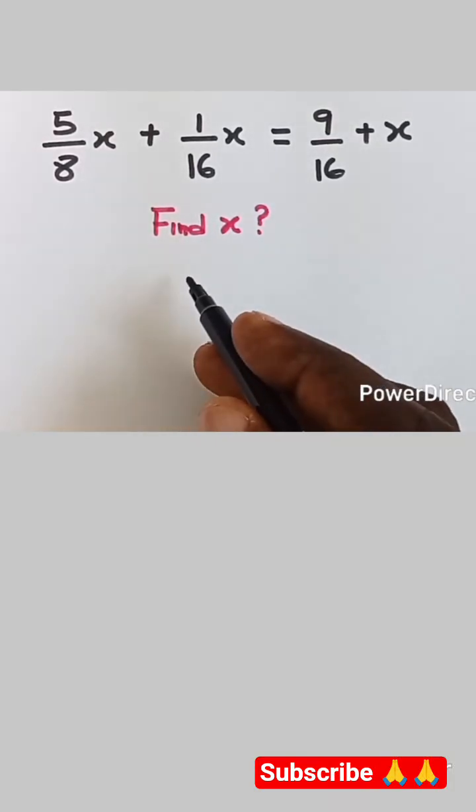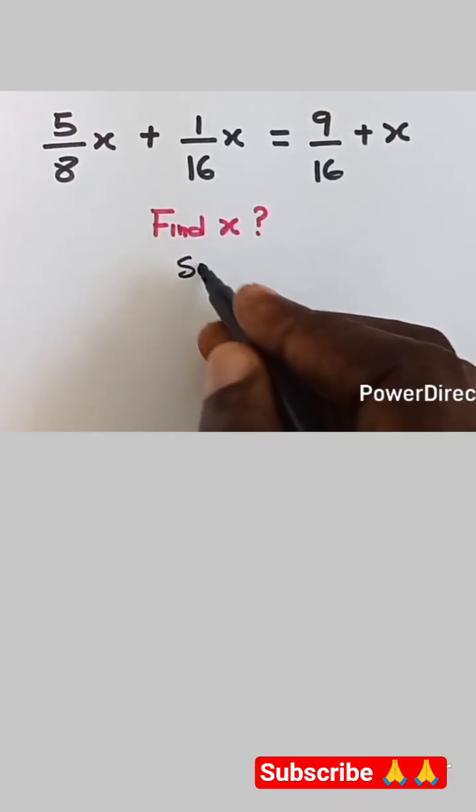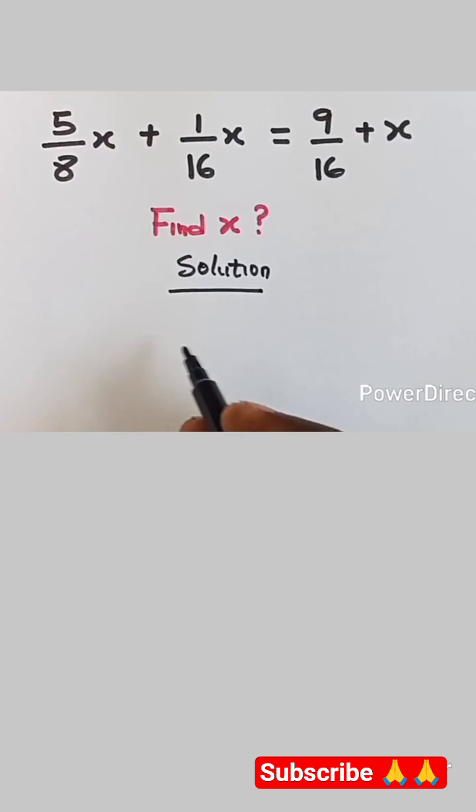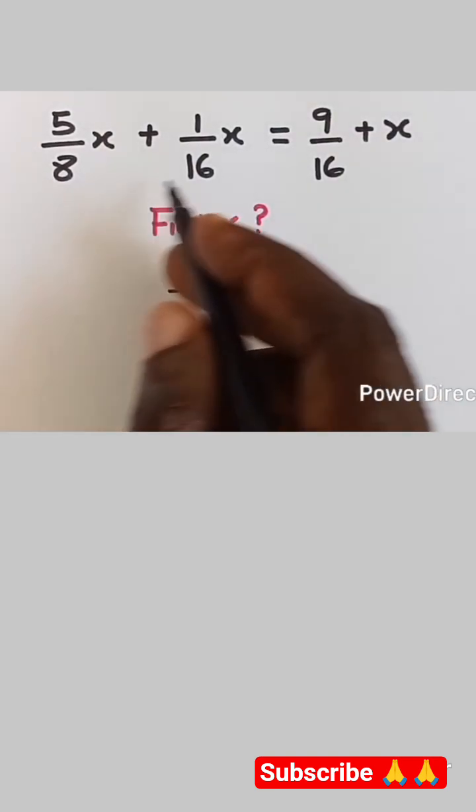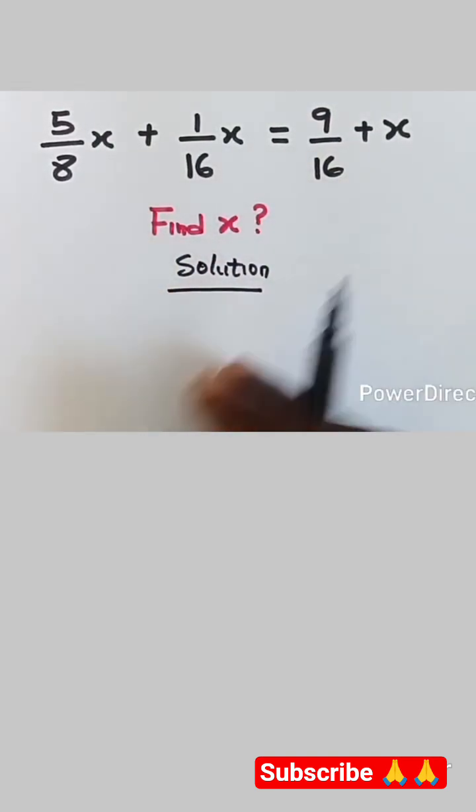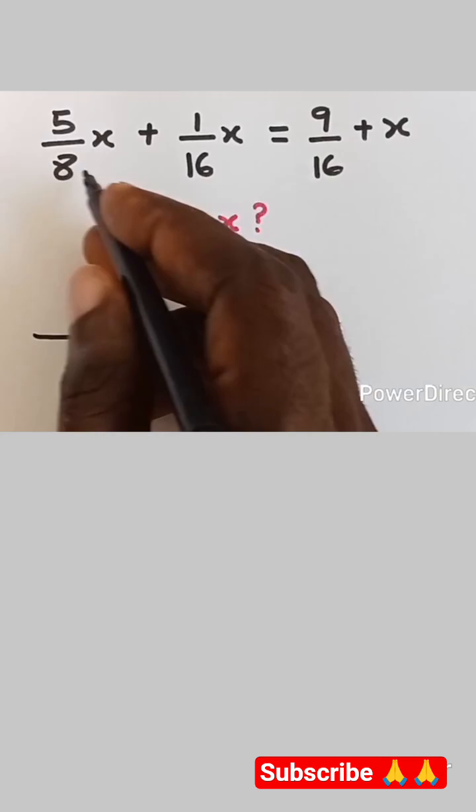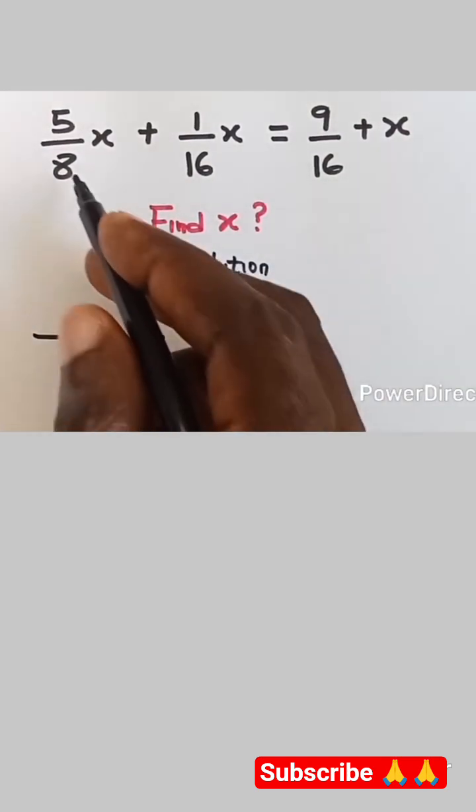Hi guys, welcome back to my channel. Now let's quickly solve this algebraic equation. We want to find x. We're going to find the LCM of 8 and 16, and also find the LCM of the other fractions that we have. The LCM of 8 and 16 is 16.